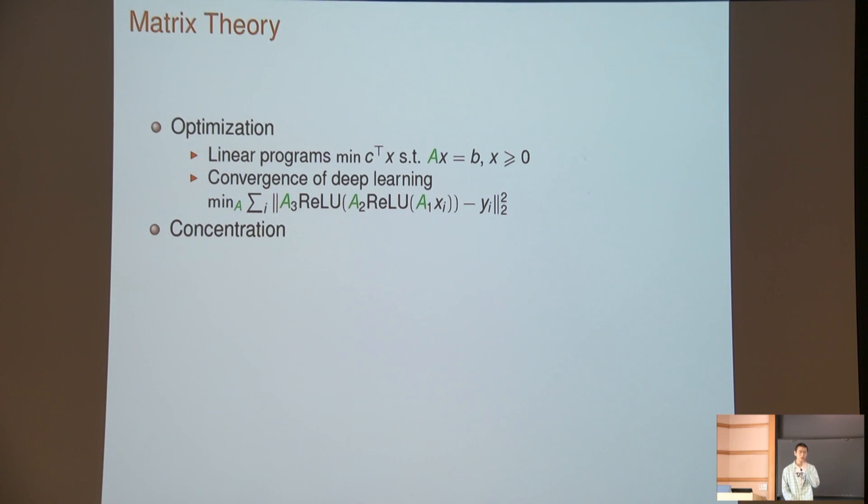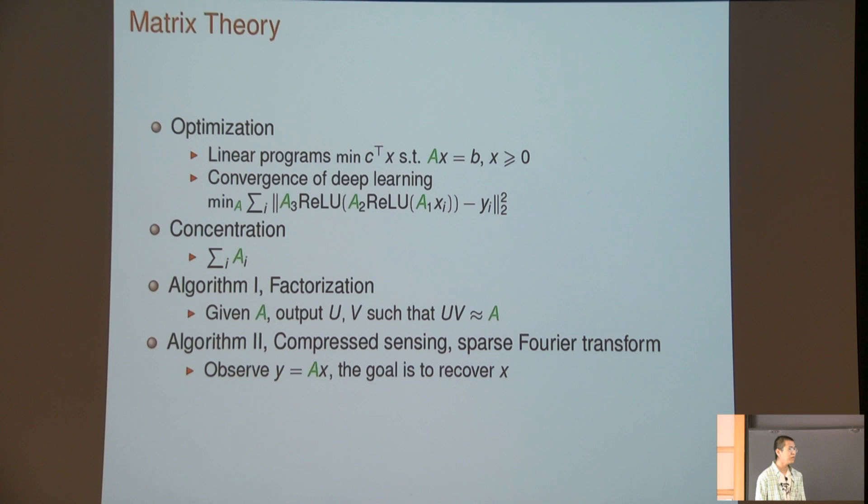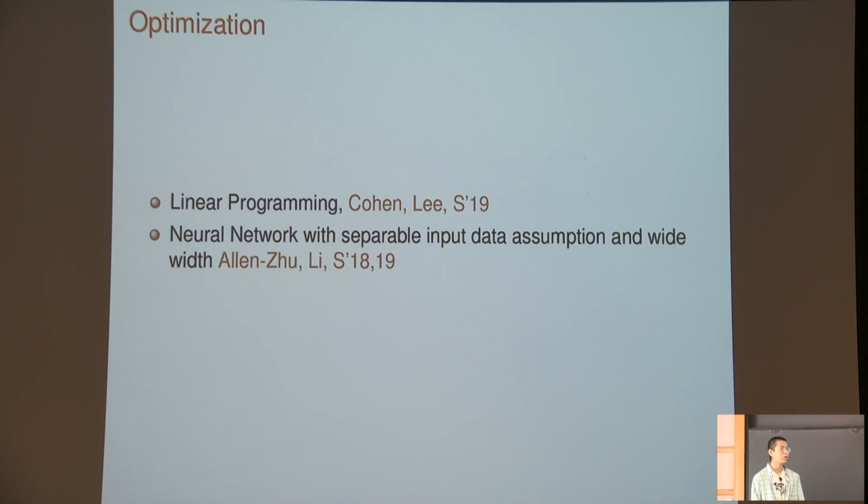Another topic I want to discuss is concentration. In general, we know if you have a bunch of random variables, they concentrate around the expectation. If you have a bunch of random matrices, what do they look like? I'm also developing some algorithms for matrices. For example, if you give a matrix A and you want to factor it into two low-rank matrices U and V. And another task is where you have a goal to choose a vector x, design a matrix A, and you can only observe your vector y, and the goal is to recover x.